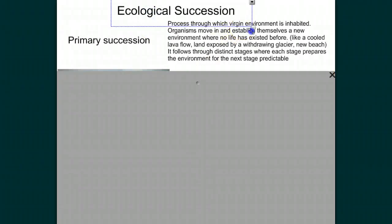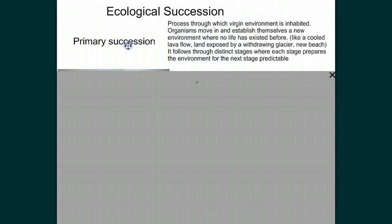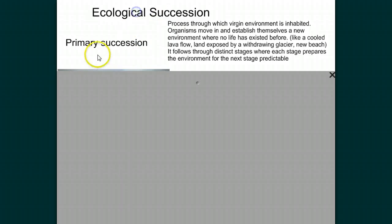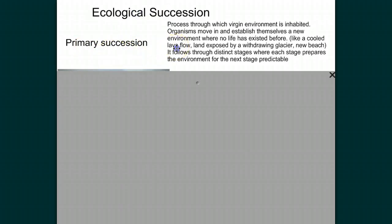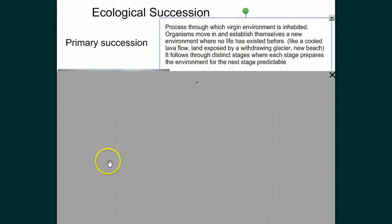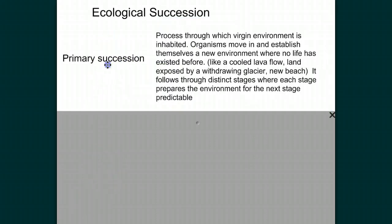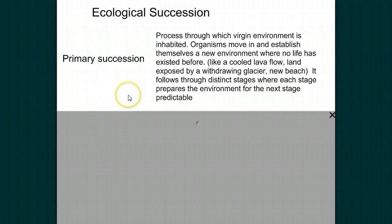I want to finish this introduction with a concept called ecological succession. The first type is primary succession — primary means first, and succession means moving through certain stages. Primary succession is the process through which a virgin environment is inhabited: organisms move in and establish themselves in a new environment where no life has existed before, like a cooled lava flow, land exposed by a withdrawing glacier, or a new beachhead. This is a very predictable set of stages where each stage prepares the environment for the next stage.